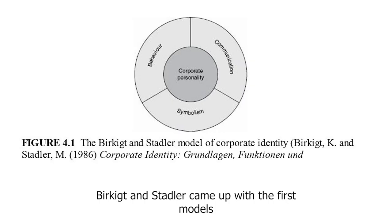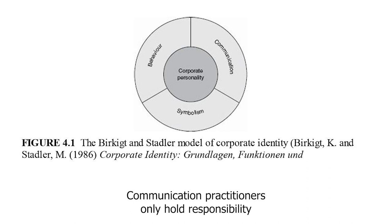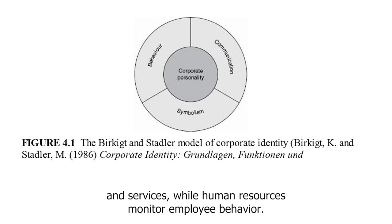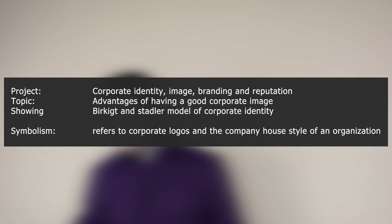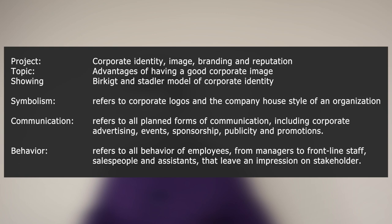Burkitt and Stadler came up with the first models of corporate image management. Through three attributes, organizations communicate and project an image of themselves to their stakeholders. Communication practitioners hold responsibility for corporate symbolism and communication. Product and brand managers are responsible for the positioning of products and services, while human resources monitor employee behavior. Symbolism refers to corporate logos and the company's house style. Communication refers to all platforms including corporate advertising, events, sponsorships, publicity, and promotions. Behavior refers to all behavior of employees — from managers to frontline staff, salespeople, and assistants — that leave an impression on stakeholders.